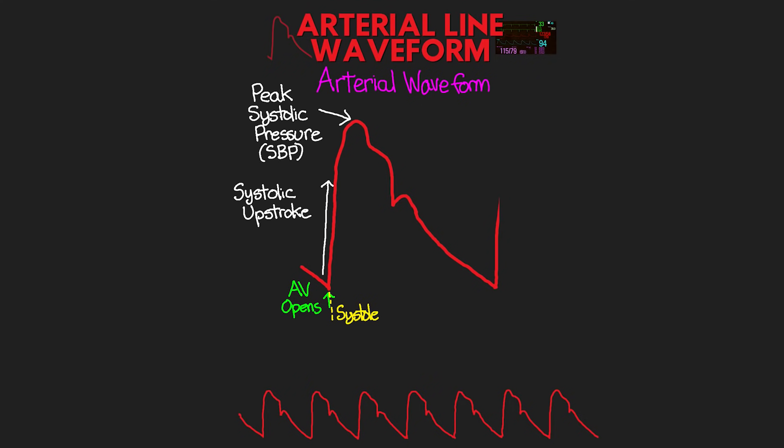Following the peak systolic pressure, we have the waveform moving downward, and this is called the systolic decline. Important to know is that the heart is still in systole here. The heart is still contracting, but the left ventricle has ejected most of the blood it will eject, and this is the remaining bit of contraction, which is not as strong, hence the decrease in pressure. But it is still a much higher pressure than the baseline.